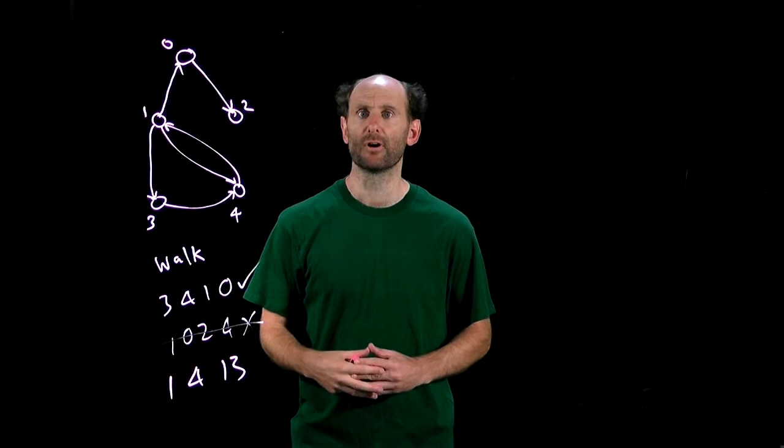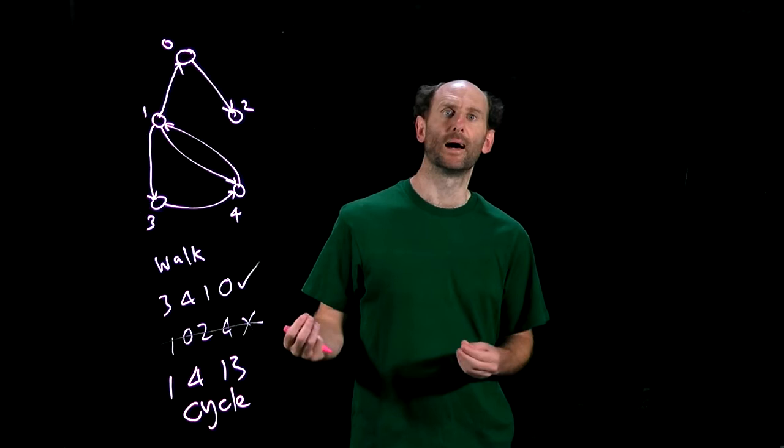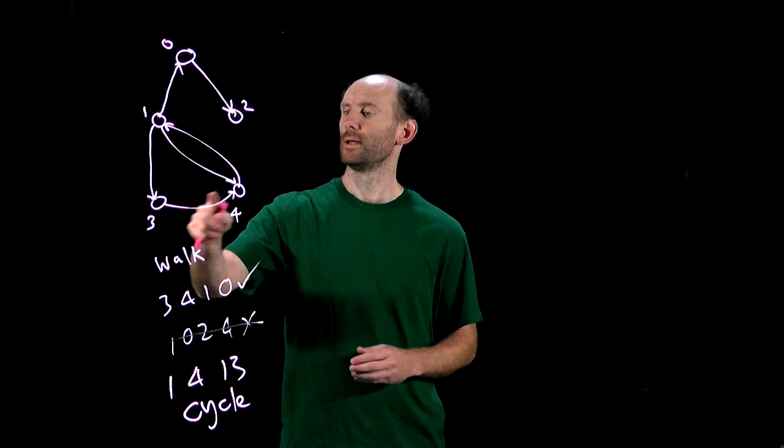Finally, we'll call a walk a cycle if the only repeated nodes are the first and the last. It is like a path but it starts and ends at the same place. An example of a cycle in this digraph is 1, 3, 4, 1.